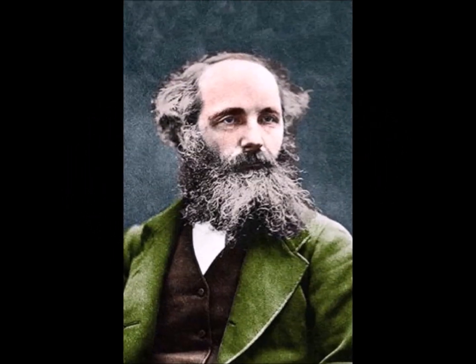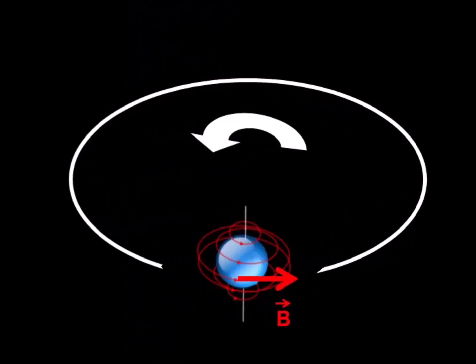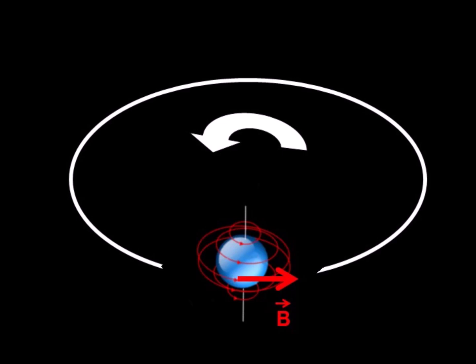Maxwell's theory ignores the fact that electrons have angular momentum. In reality, when the disk rotates, the spins of the electrons statistically align with the axis of rotation. And so the orientation of their magnetic field changes. It is precisely this orientation that is the cause of the magnetic field.